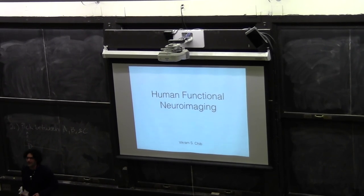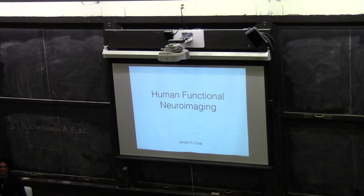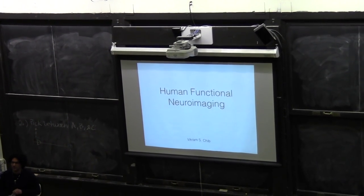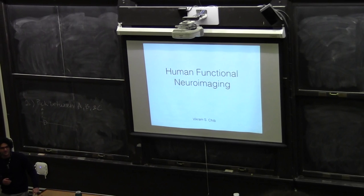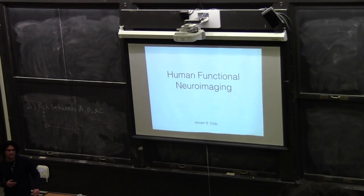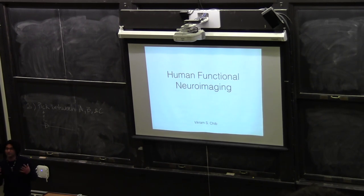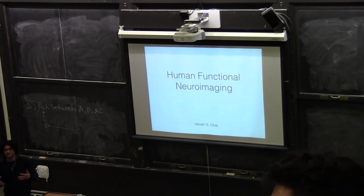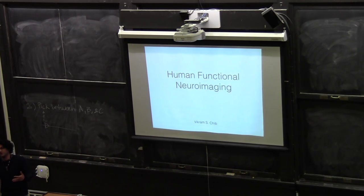My name is Vikram Chib. I'm a faculty in the BME department, relatively new faculty — I've been here about two years — and my work involves understanding how the brain computes economic decisions. It falls in the area of neuroeconomics. To do this we use human subjects. We scan them with fMRI, put them in an MRI magnet, look at how their brain activates and deactivates in response to rewards and other types of cues, and try to get an idea of how the brain processes these stimuli and how they result in motivated performance.